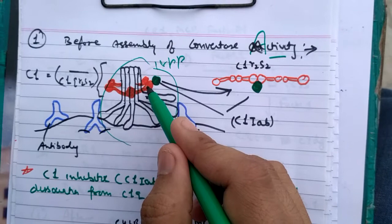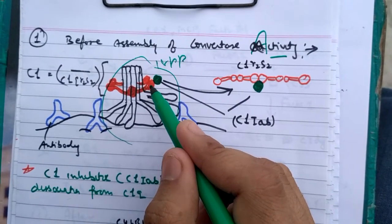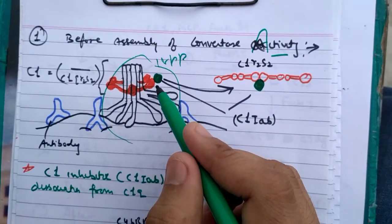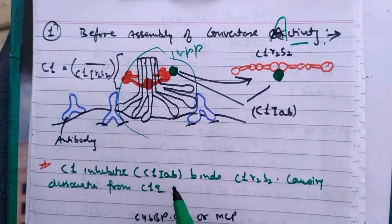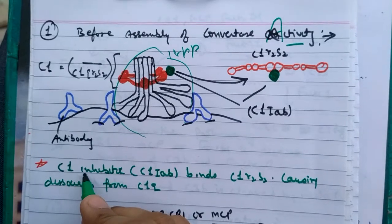It has two C1R and C1S components. So here is an inhibitory protein, i.e. C1 inhibitor.